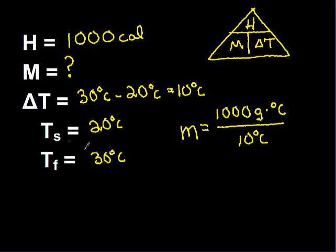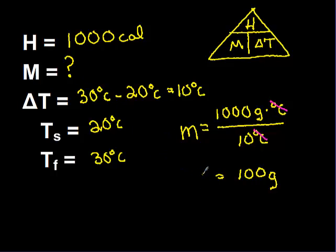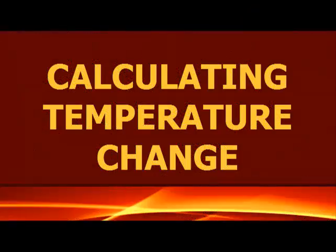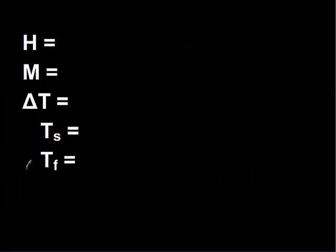Now I want to look at units I need to cancel. I have grams degrees Celsius on top and degrees Celsius on the bottom, so those cancel out, leaving my answer in grams. All I need to do is take 1,000 divided by 10, and that gives me a mass of 100 grams. That's the mass I would find in this particular problem.